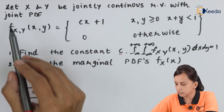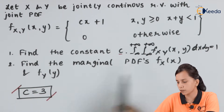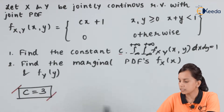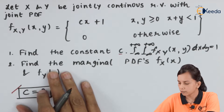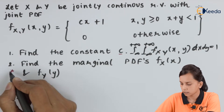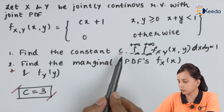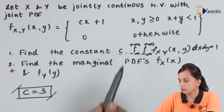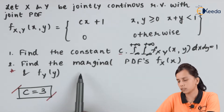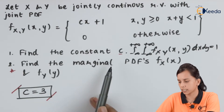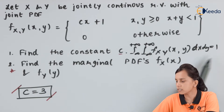If in the examination they are only asking to find the marginal PDFs fx(x) and fy(y), and not asking to find c, we still need to find c first. Whether it is asked or not, we have to find the value of c using this property, then come back to the second part.